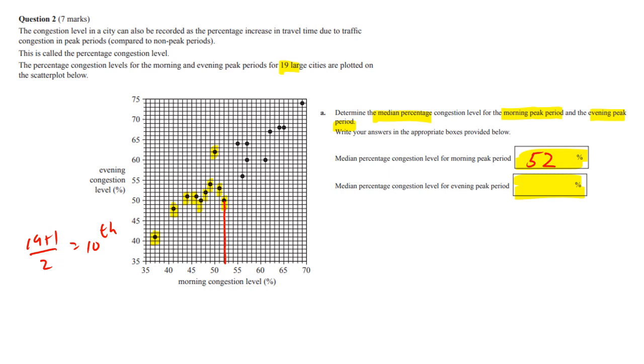Now what most people did then was, well that's the median spot, and then read it across like that. But you can see from this dot there's a lot more than 10 spots above it. So remember, just because you're median for the morning doesn't mean you're the median for the evening. They're not connected in that way.